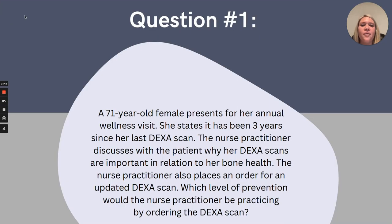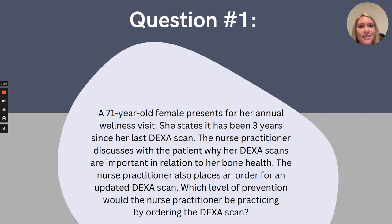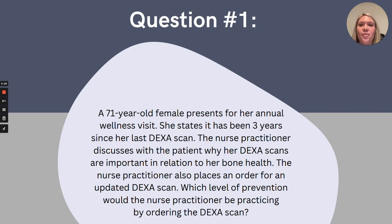So let's work through some scenarios, and I want you to think about which level of prevention each of these represents. Our first question: a 71-year-old female presents for her annual wellness visit. She states it's been three years since her last DEXA scan, and the nurse practitioner discusses with the patient why her DEXA scans are so important in relation to her bone health. The nurse practitioner also places an order for an updated DEXA scan. Which level of prevention would the nurse practitioner be practicing by ordering the DEXA scan? This is going to be secondary prevention — this one's a little bit tricky, as in the beginning of the question the nurse practitioner is providing education on the importance of the DEXA scan, but the NP ordering the DEXA scan would be secondary as we are screening for possible osteopenia or osteoporosis.